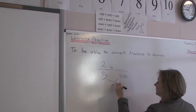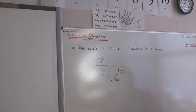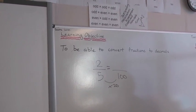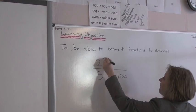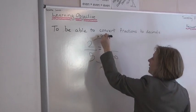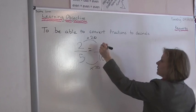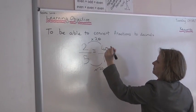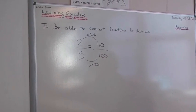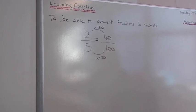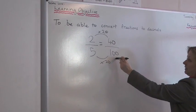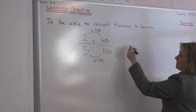Brilliant. So what about that top number? You always do the same to the top as what you do to the bottom — that's the rule of fractions. Times 20. So that's going to be 40, isn't it? 40 over 100. So what would that be? Is it a percentage? A percentage is always out of 100. Therefore it's going to be 40%.